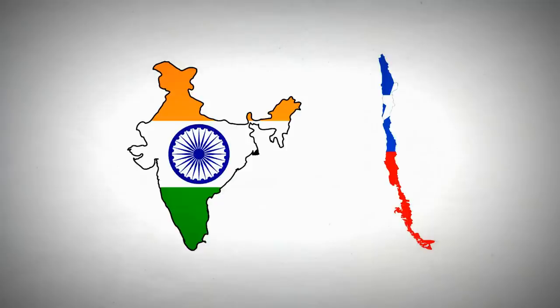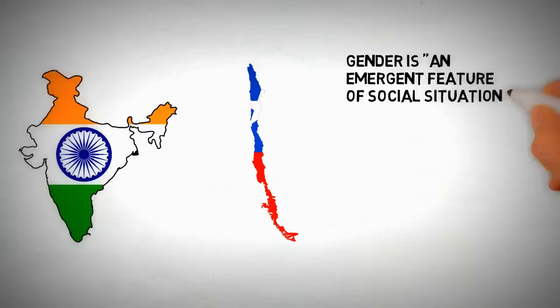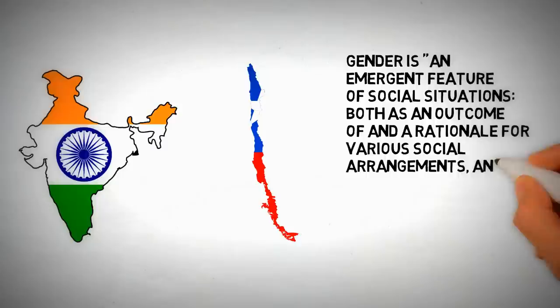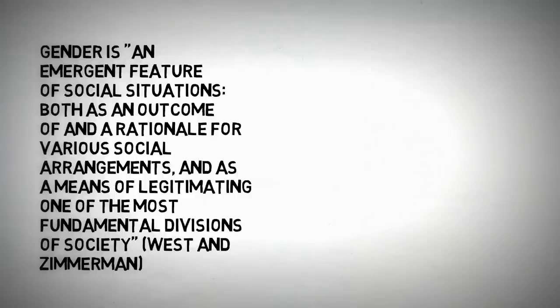According to the academics Candice West and Dawn Zimmerman, gender is an emergent feature of social situations, both as an outcome of and a rationale for various social arrangements, and as a means of legitimating one of the most fundamental divisions of society.